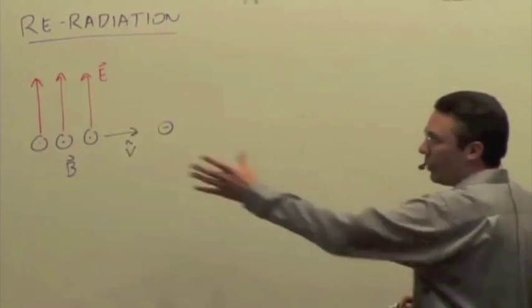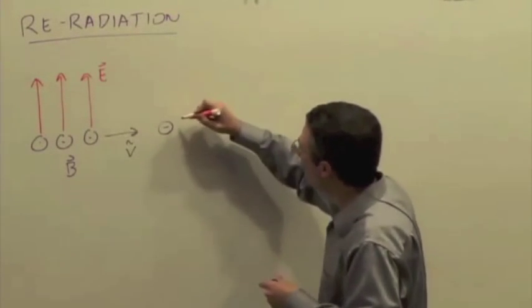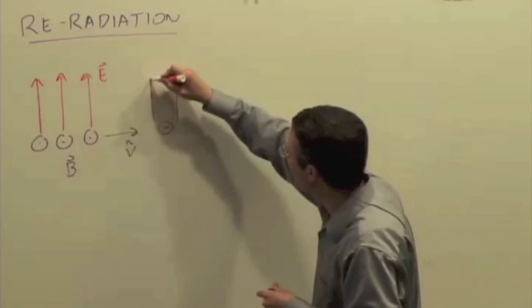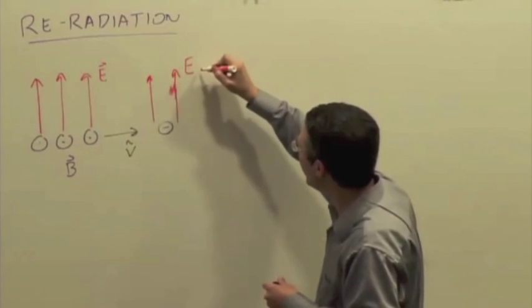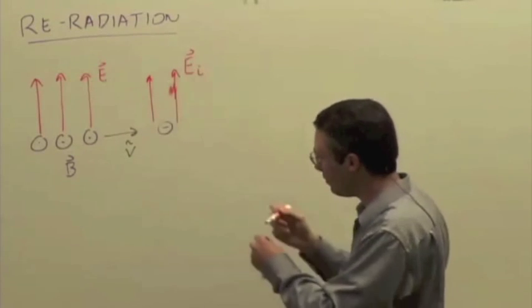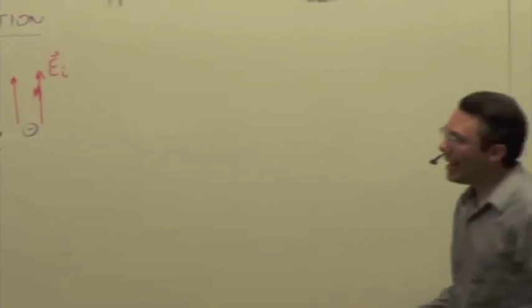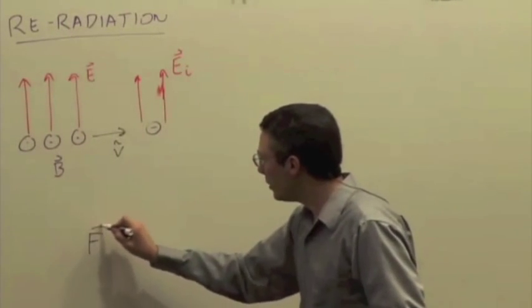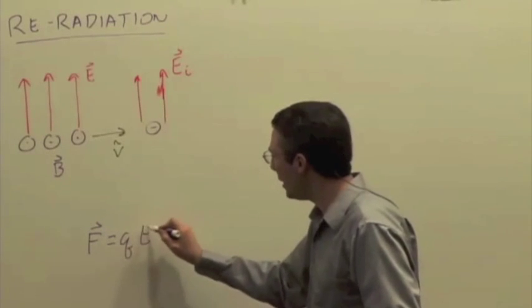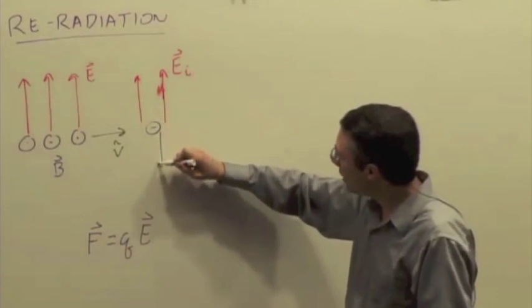We have this electric field coming in, this radiative initial electric field coming in, call it E sub I, just to distinguish it from the re-radiation. And that charge is going to accelerate. We know that the force is Q times E. So this is a negative charge. It's going to accelerate downward.